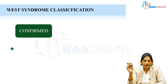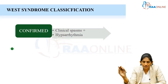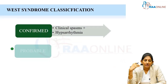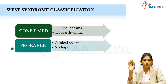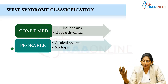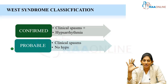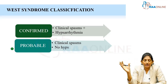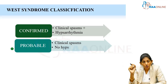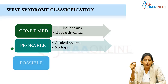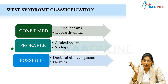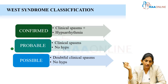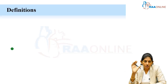West syndrome can be classified as confirmed West syndrome when there are spasms in the child and EEG shows hypsarrhythmia. When there is a probable cause — you observe the spasms but the EEG does not show hypsarrhythmia — it is named probable West syndrome. You have seen the epileptic spasms and are convinced clinically, but the interictal EEG does not show hypsarrhythmia. There is also possible West syndrome where the spasms are clinically doubtful and EEG also shows no hypsarrhythmia. This is the accepted classification for West syndrome.